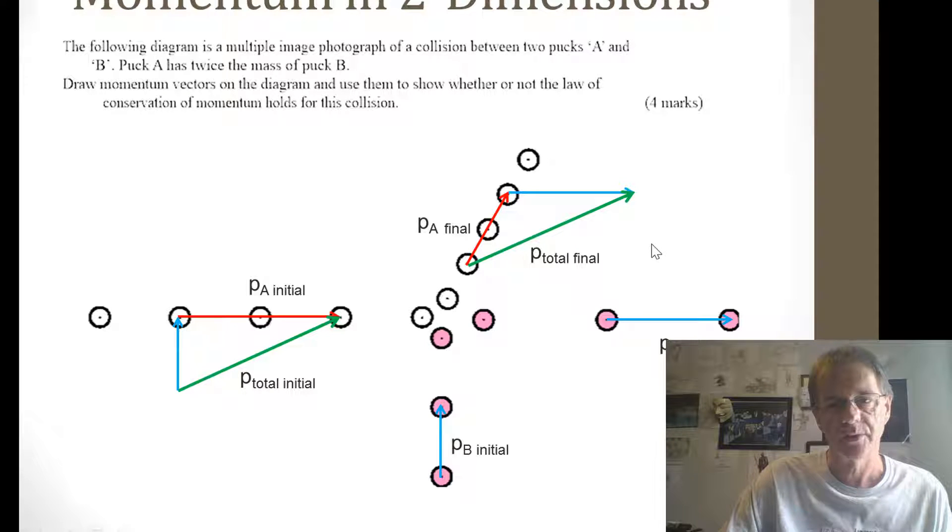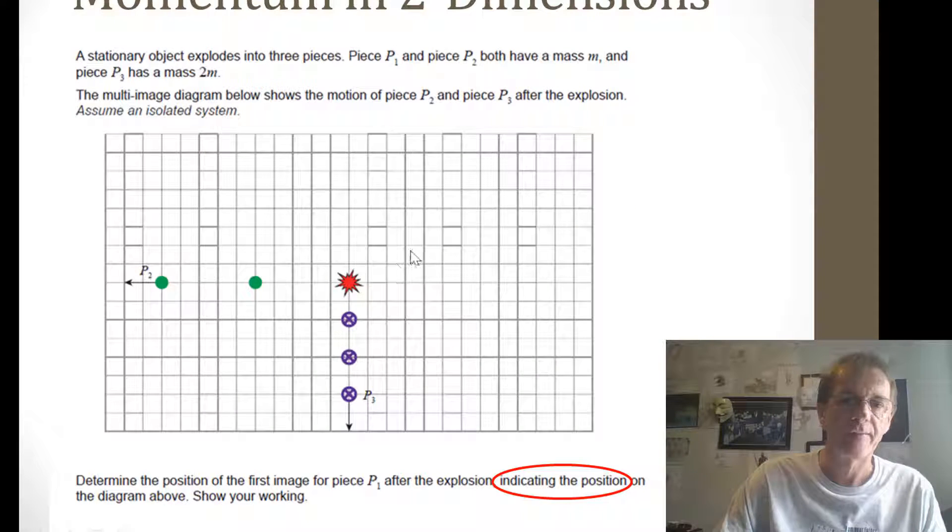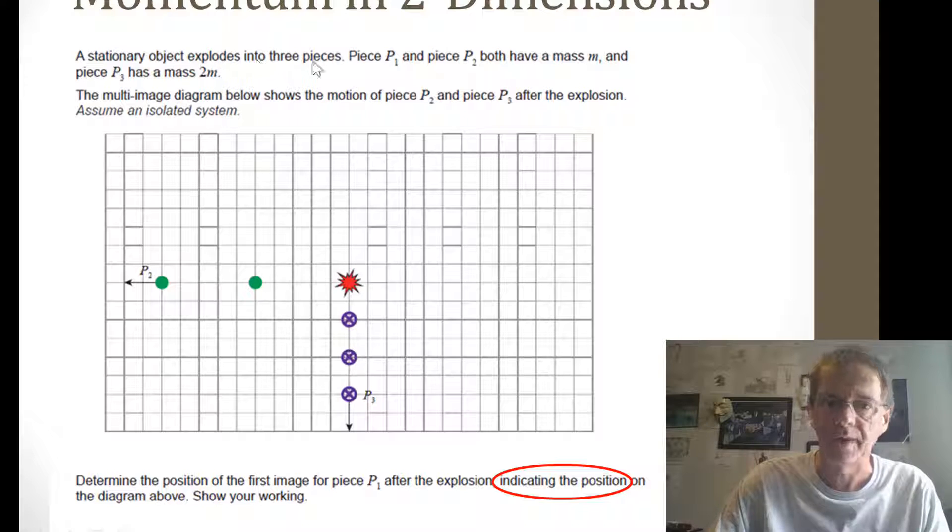Is it exactly the same direction as well? So one that's in recent exams is they miss out one set of images somehow and you've got to finish it for yourself. So looking at this you've got a stationary object that's exploded in three pieces P1 and P2 and they have got a mass of M. P3 though has got a mass of 2M. The multi-image diagram shows the piece 2 and piece 3 after the explosion. Determine the position of the first image for piece P1 after the explosion indicating the position of the diagram.